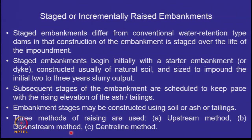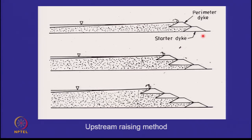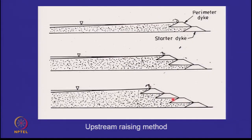Subsequent stages of the embankment are scheduled to keep pace with the rising elevation. These stages may be constructed using soil or ash or tailings, but we predominantly want to maximize use of the deposited material. Of course, if tailings are classified as hazardous you cannot use them in the embankment, but as long as they are non-hazardous you can. The three methods look like this: the starter dike is made of natural soil, then material is deposited, and once it rises toward the top, the second dike is made primarily of that deposited material.